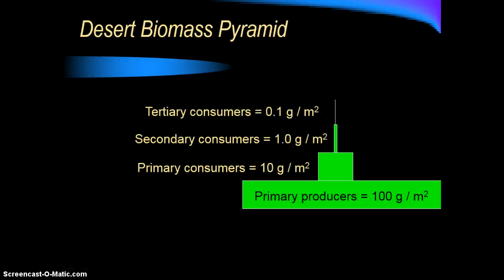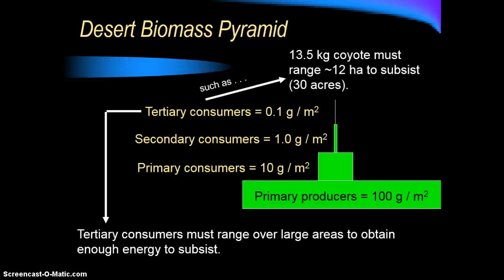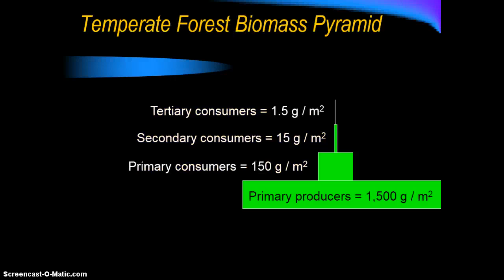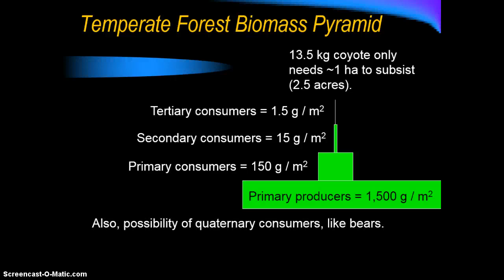This pattern appears in many different environments, all following the same rules. There are not very many tertiary consumers — they tend to be larger animals that range over really large areas to get enough energy to survive. For example, a 13.5 kilogram coyote needs a range of about 12 hectares or 30 acres to get enough energy. You see the same 10% rule pattern in the forest as you do in the desert.